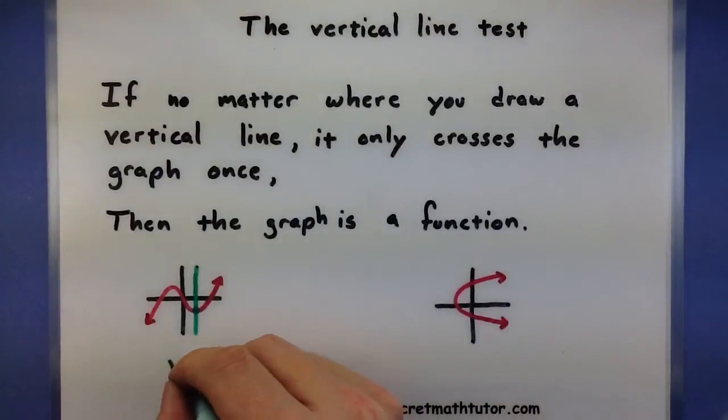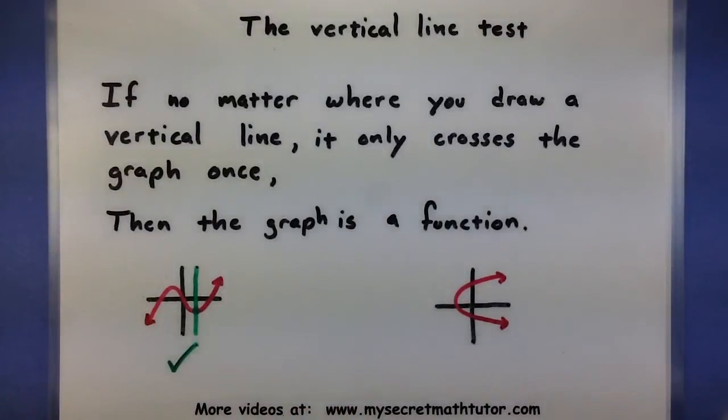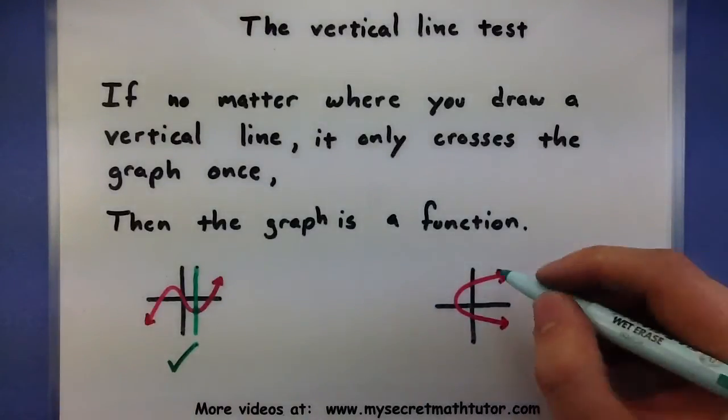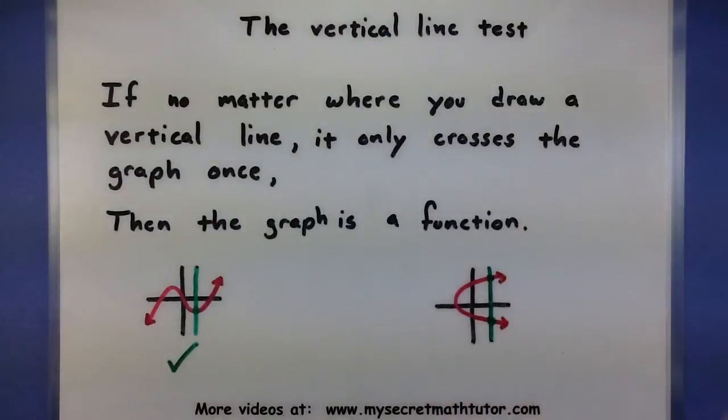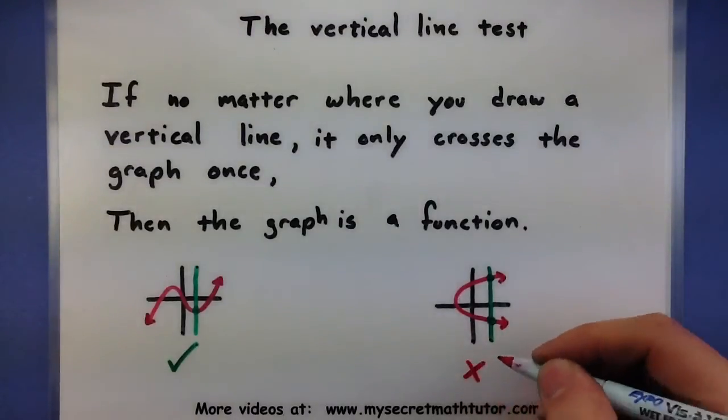Since no matter where I put this line, it only does cross once, I can say that yes, this first graph here is an example of a function. Now go ahead and contrast to this second guy over here. If I try and draw a vertical line on this one, it crosses through two different spots. And because it does that, I can say, well, this is definitely not a function.